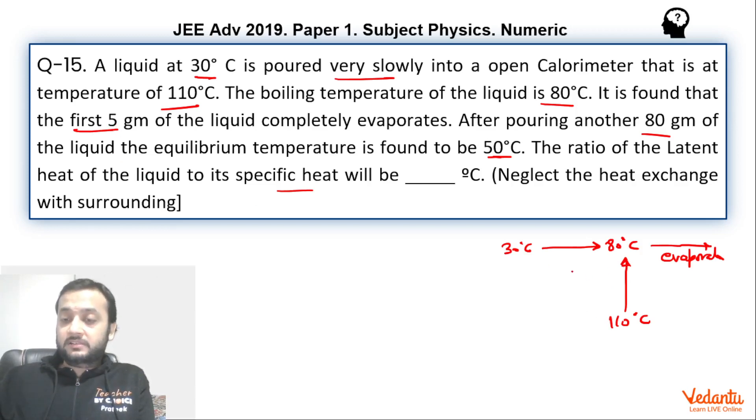That means after pouring 5 grams, calorimeter would have acquired 80 degrees celsius and after that it will go below 80 degrees celsius so that liquid is not able to reach 80 degrees celsius so that there is no evaporation happening.